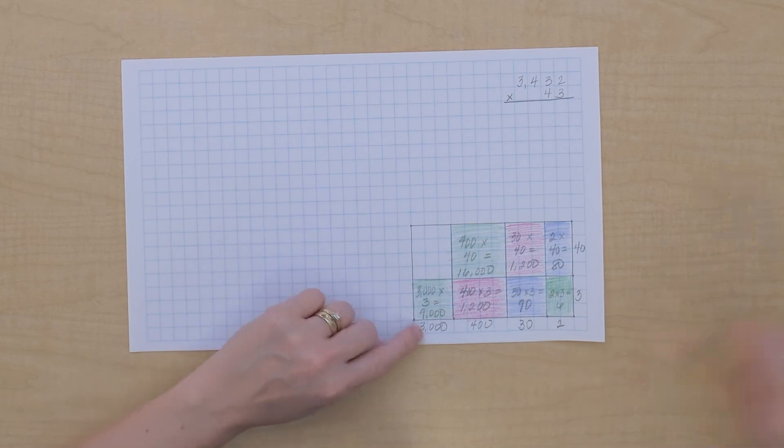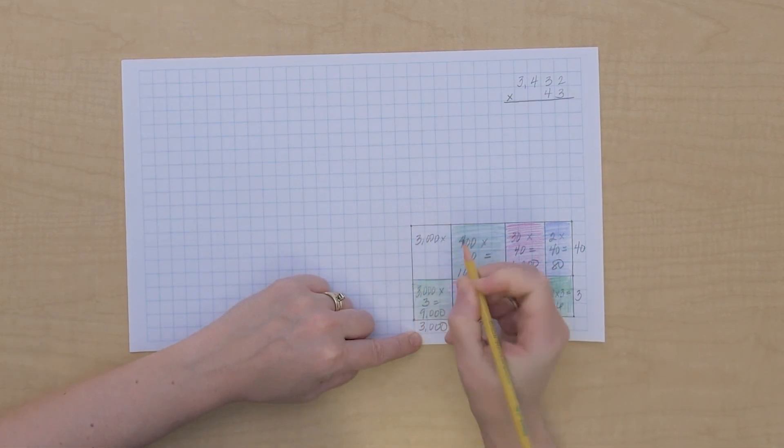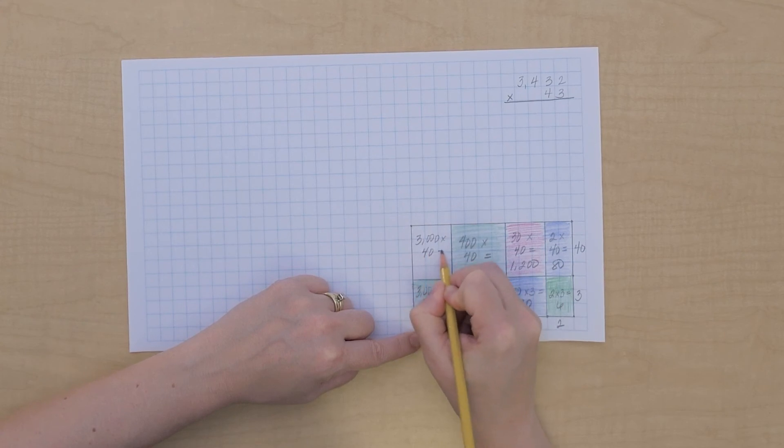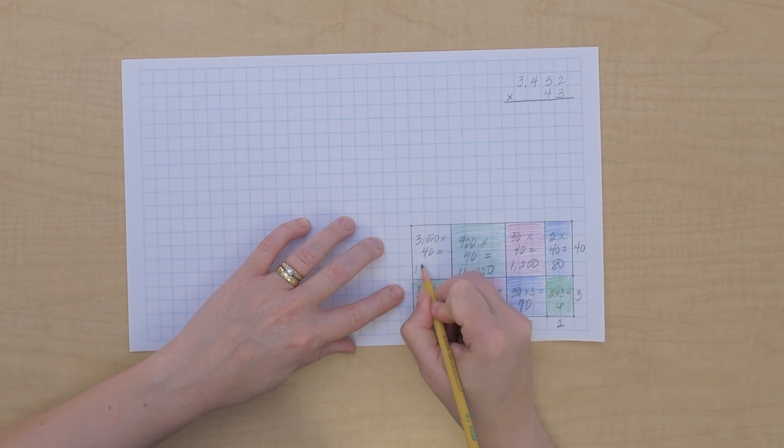And our last multiplication, 3,000 times 40. Thousands times tens gives us ten thousands, and so we've got 120,000.